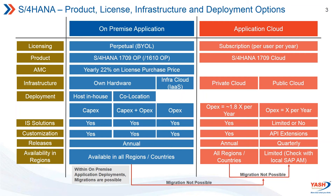Regarding AMC: when I buy a perpetual license from SAP, I pay annual maintenance — currently at 22 percent per year on the overall license price. When you go for an S4HANA cloud, there is no AMC at all because you pay subscription every year.